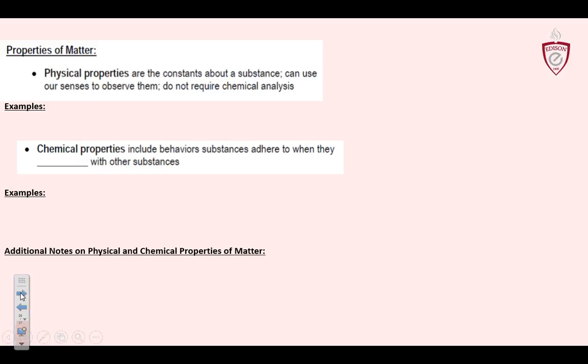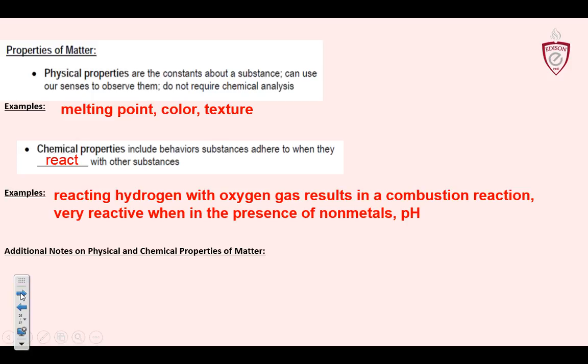First, our physical properties of matter. These are the constants about a substance that we can observe with our senses — color, texture, and also something like melting point. Chemical properties are different; that's more how they react with each other. Something like reacting hydrogen with oxygen gas results in a combustion reaction — something that's very reactive in the presence of non-metals, or pH. We're looking for that reaction that's going to change that way.